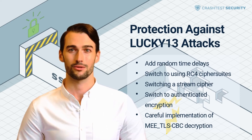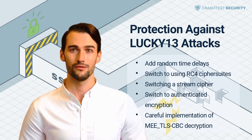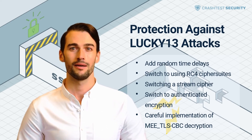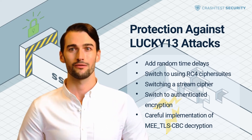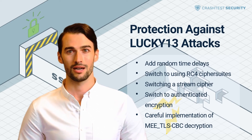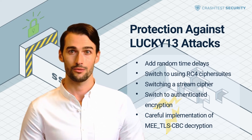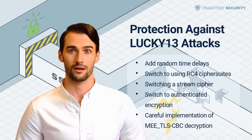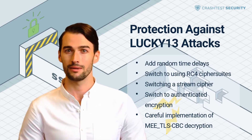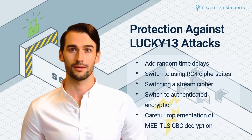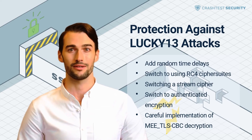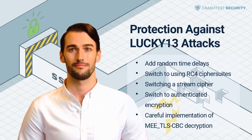This approach requires great care and attention and is likely to present a challenge. For this reason, the most viable long-term mitigation strategy for avoiding SSL Lucky 13 attacks is to avoid using TLS in CBC mode and implement the use of AEAD cipher suites.